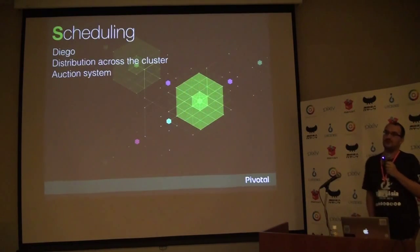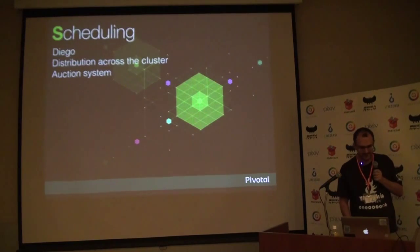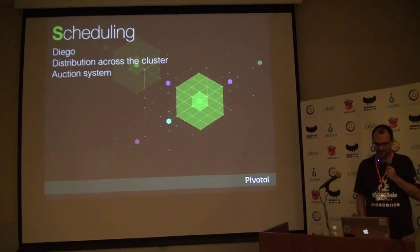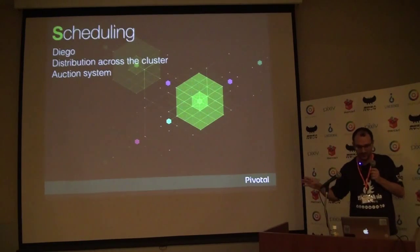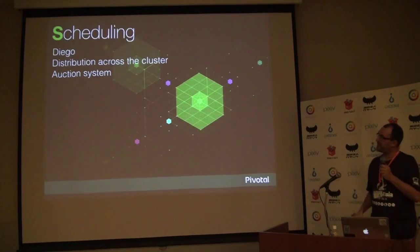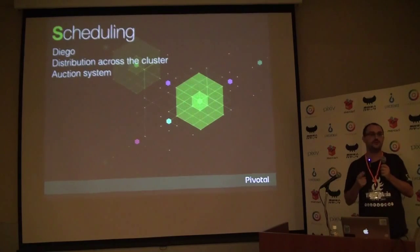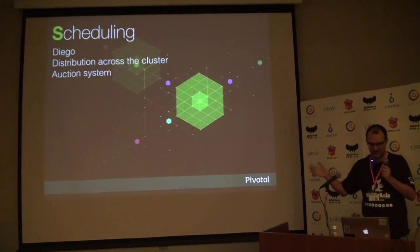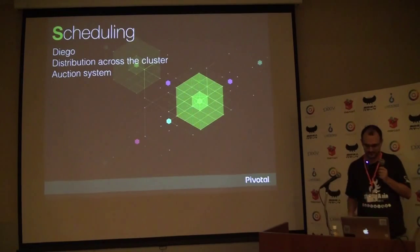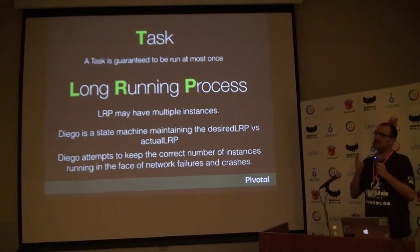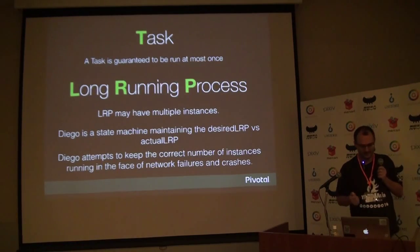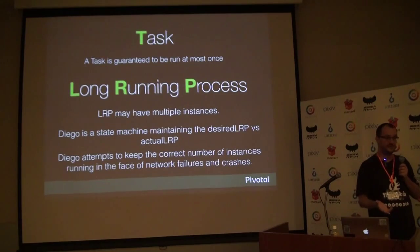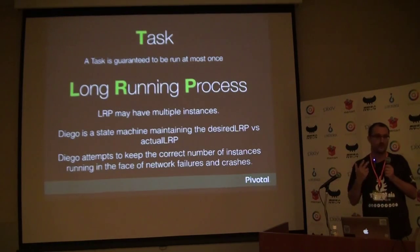Now let's talk about scheduling, because I think it's an important part of Lattice. As I already mentioned, the scheduler's name is Diego. As a scheduler, it takes care of distributing your workload across the cluster. Diego uses an auction algorithm — Kubernetes uses the bin-packing one, but for CloudFoundry we decided to use the auction algorithm. Diego understands two things: a task, which is guaranteed to run once, and what we call a long-running process, which can run forever, can have multiple instances, and should resist crashes, network failures, etc.